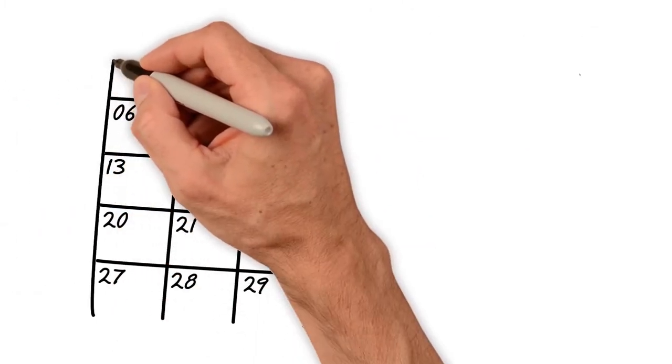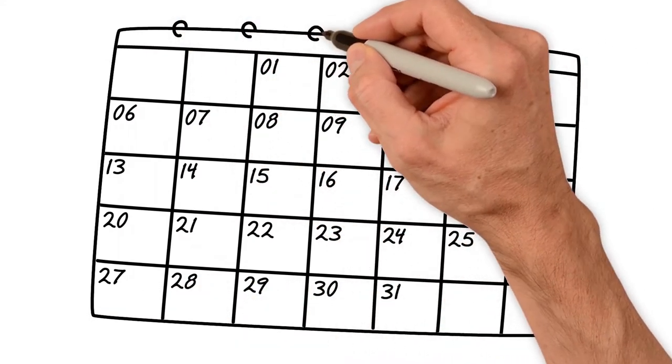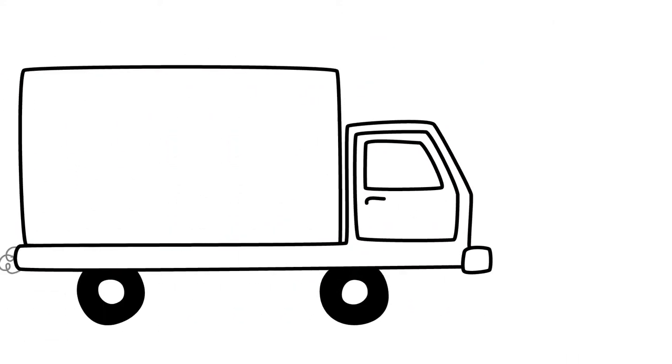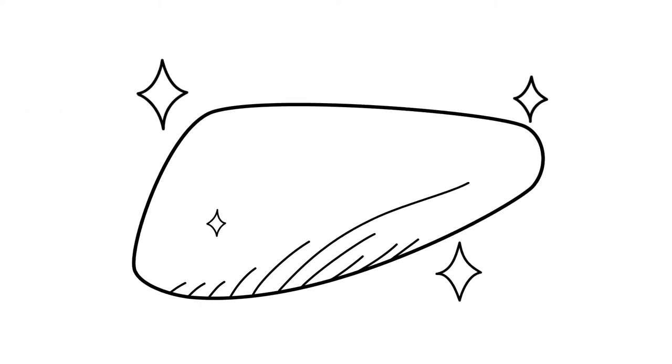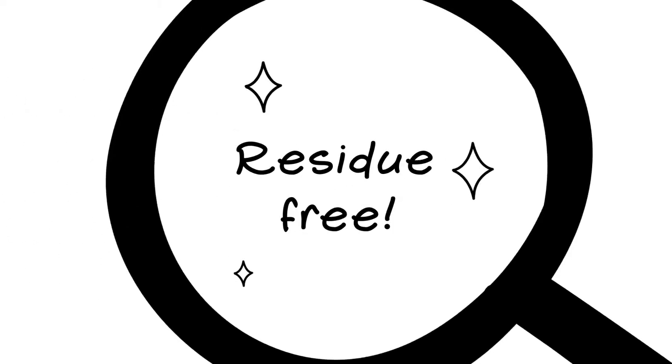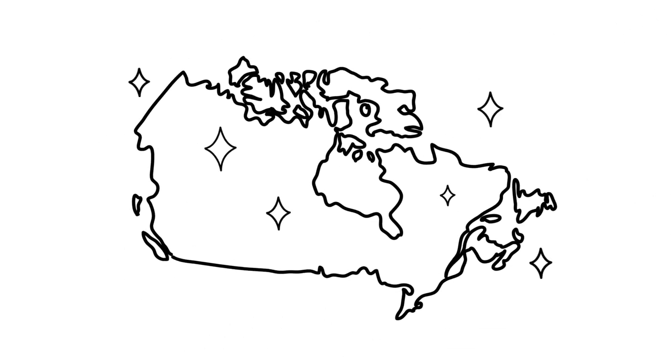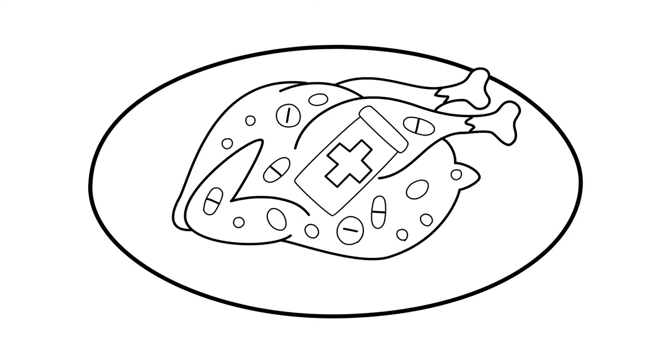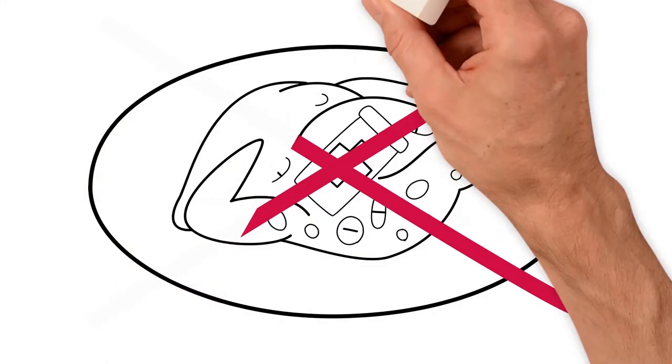There are strict regulations governing how much time passes between when a chicken is last treated with antibiotics and when it is sent to the processing plant. It's called a withdrawal period and it ensures that residues aren't in the meat. And it's inspected. There hasn't been an issue with residues in chicken meat in Canada in decades. That's it. Chicken is not full of antibiotics. Don't let anyone tell you otherwise.